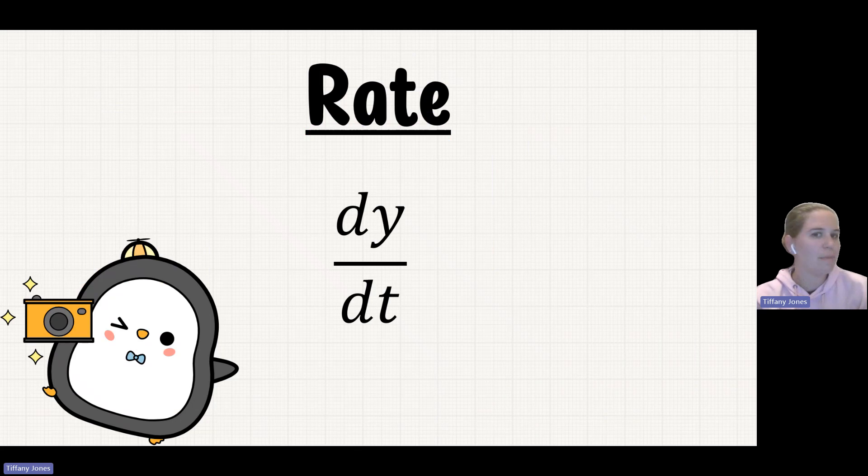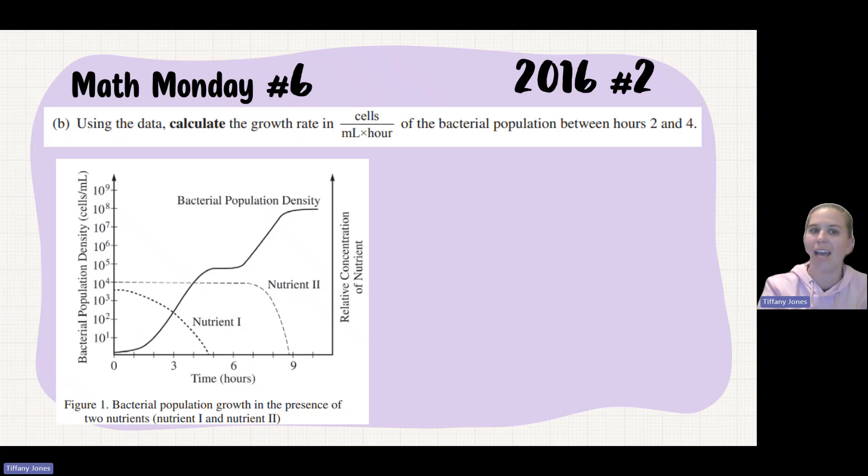So here's the math. This comes off of our formula sheet. And dy over dt would be your rate. So let's talk about the change in y over your change in x. So using the data, calculate the growth rate in cells per milliliter hour of the bacterial population between hours 2 and 4.